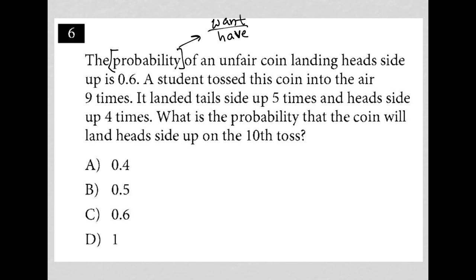The probability of an unfair coin landing heads side up is 0.6. So what do I want? I want the unfair coin landing head side up. So I know that that value is 0.6, which is the same as like 6 out of 10.